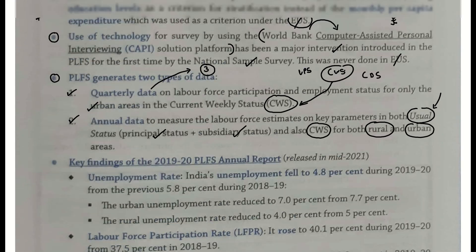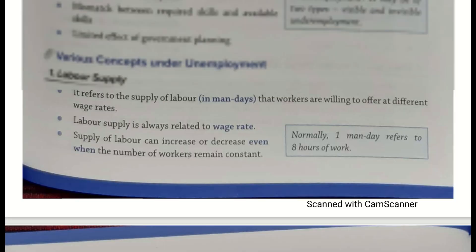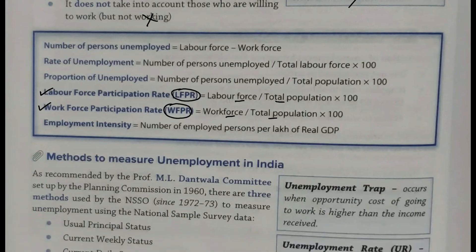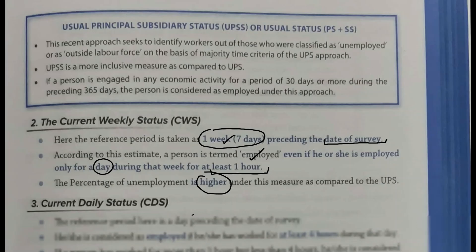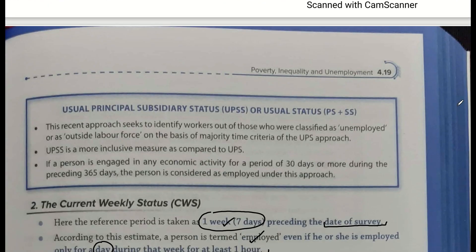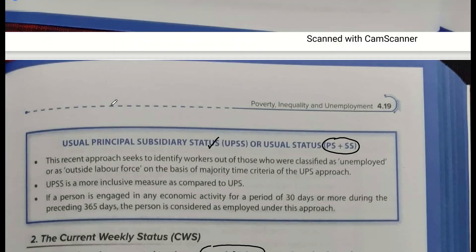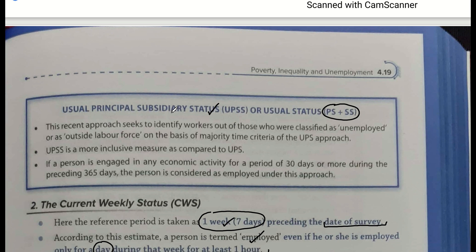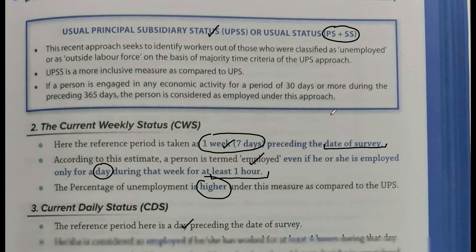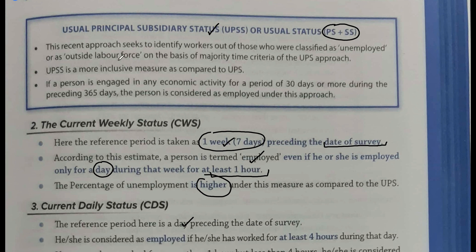Usual status mein kya likha hua hai? Yeh Usual Principal Status bhi — yahan ek box mein humne baat ki thi ki Usual Principal Status bhi aur Subsidiary Status bhi. UPS aur US-SS (subsidiary status) ke baare mein humne baat ki thi. Toh ek toh hota hai sirf Usual Principal Status, aur yeh Subsidiary Status. Humne dekha tha ki thoda sa yeh precise ho jaata hai, yeh zyada inclusive hota hai.